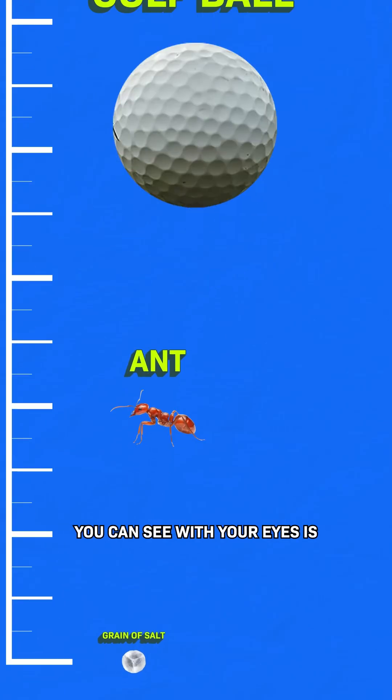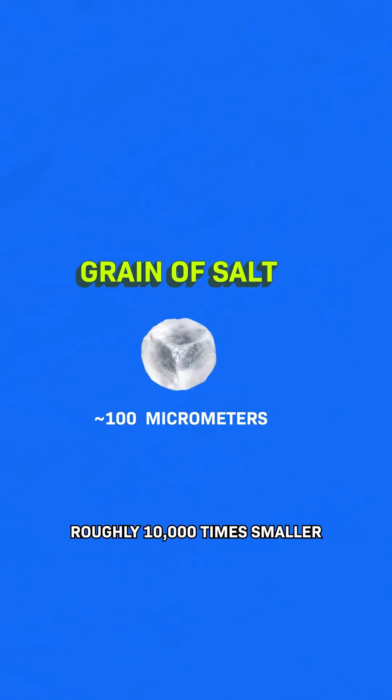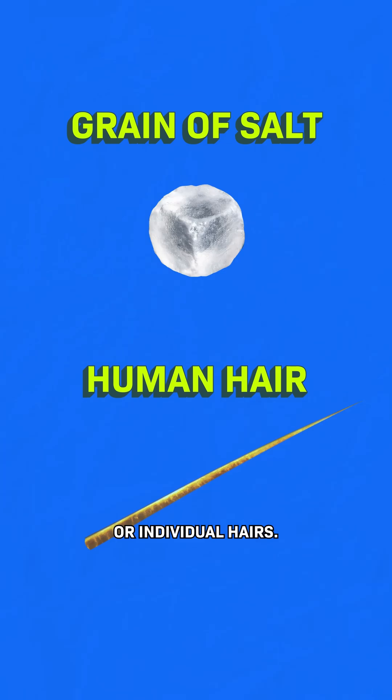And my question is, how? Well, the smallest you can see with your eyes is roughly 10,000 times smaller than a meter, like small grains of salt or individual hairs.